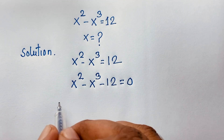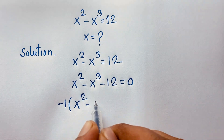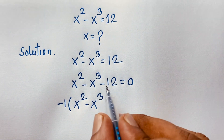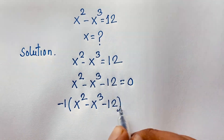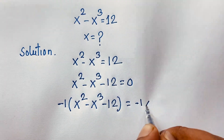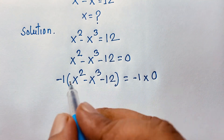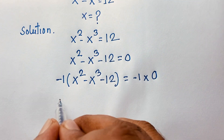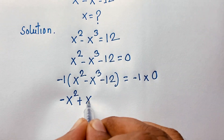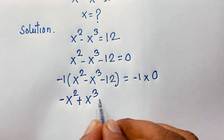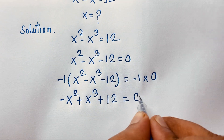Now I multiply both sides by negative 1. So negative 1 times x squared minus x to the power 3 minus 12 is equal to negative 1 times 0. You can see: plus times minus will be minus x squared; minus times minus will be plus x to the power 3; minus times minus will be plus 12, equal to 0.